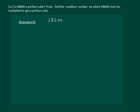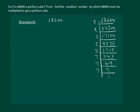So let us prime factorize 68600. After prime factorization, we get 68600 equal to 2 into 2 into 2 into 5 into 5 into 7 into 7 into 7.